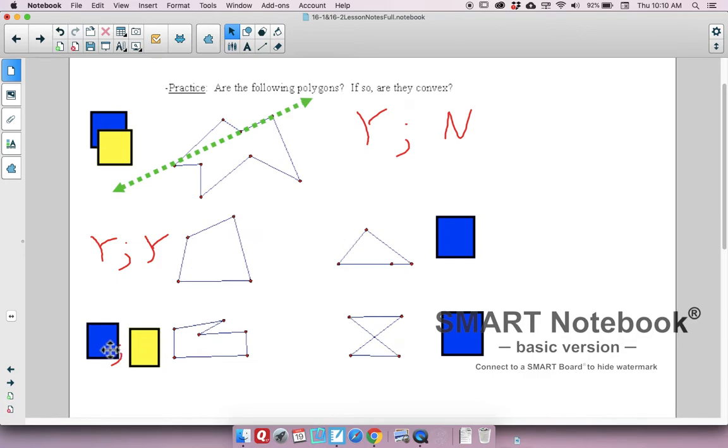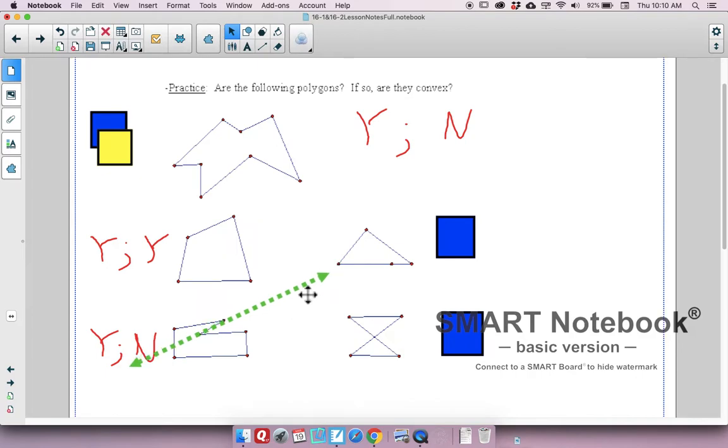Let's move down to this one. Polygon? Yes. Convex? No, it's concave. Think about it. If we drew or we put in this line, you get the picture. We have points over here, points over here.